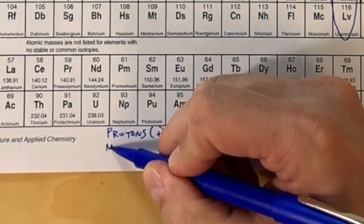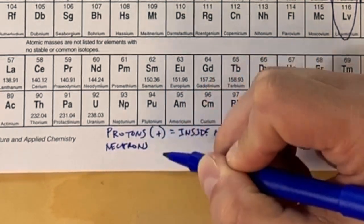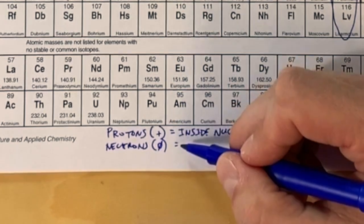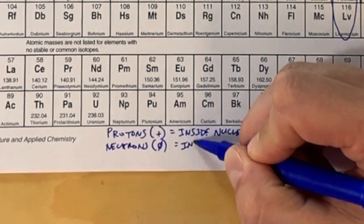The next thing we have are neutrons and they have no charge, so we're going to put a zero here because they have no charge, and they're also found inside the nucleus.